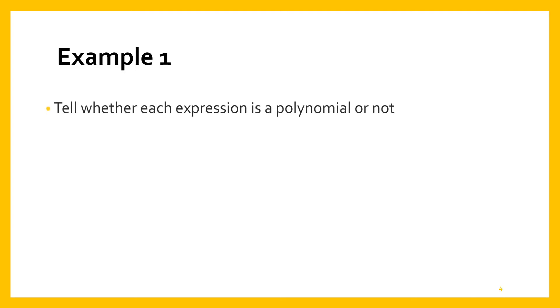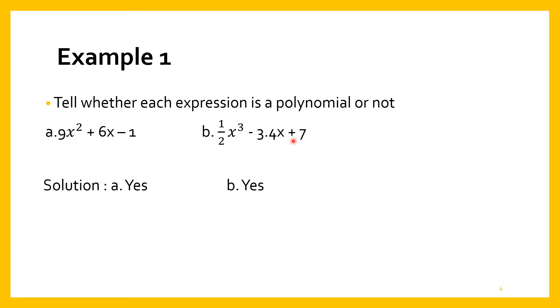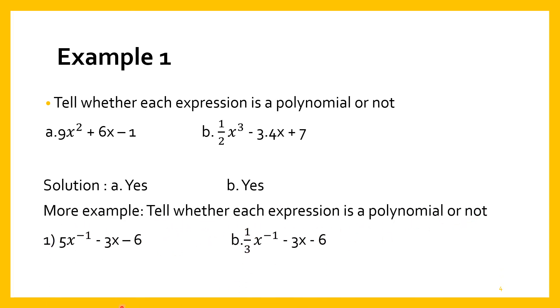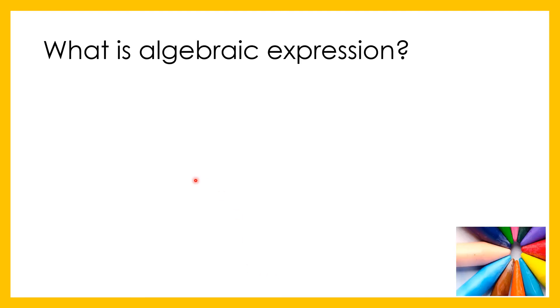Example number 1. Tell whether each expression is a polynomial or not. 9X² + 6X - 1. Letter B, ½X³ - 3.4X + 7. The solution: A is a polynomial, yes, and B is also a polynomial. Number 1 is a polynomial. Number 2 is also a polynomial.